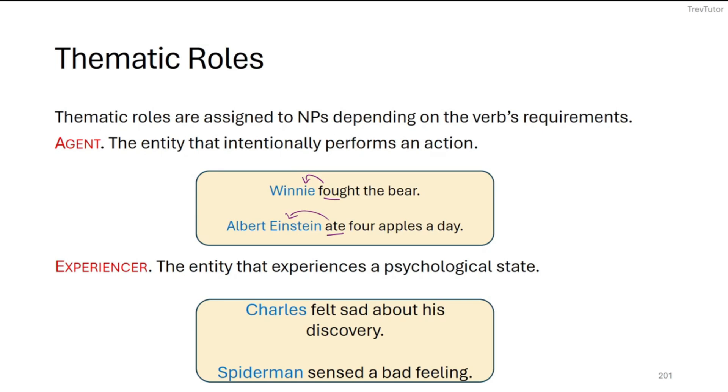Now, experiencers can also exist as subjects. So when we say Charles felt sad about his discovery, Charles here is an experiencer. And we say he's an experiencer because a feeling is not something that you actively do. You don't intentionally perform a feeling. When you feel sad, you simply experience that emotion or you experience that action. For Spiderman sensed a bad feeling, same thing here. We have an experiencer rather than an agent because when you sense something, that's not something you actively do. That's not something you actively initiate. This is an experience of that action of sensing.